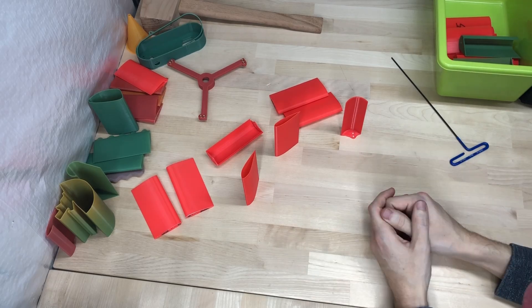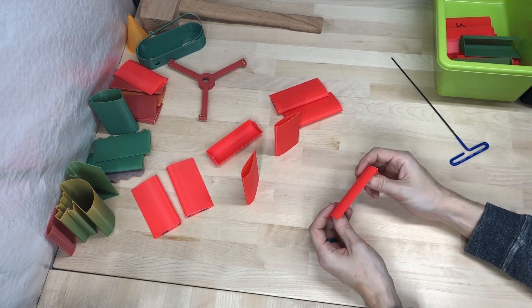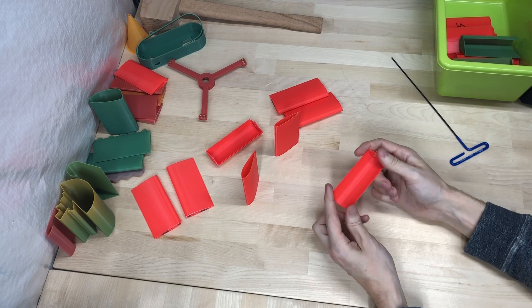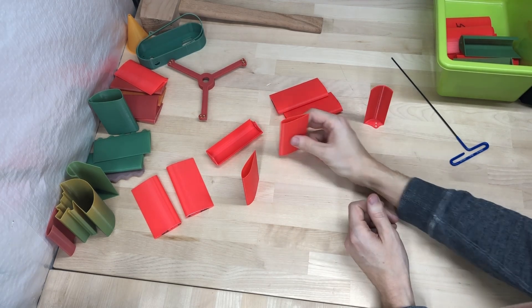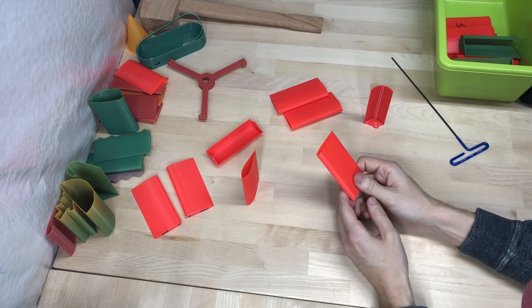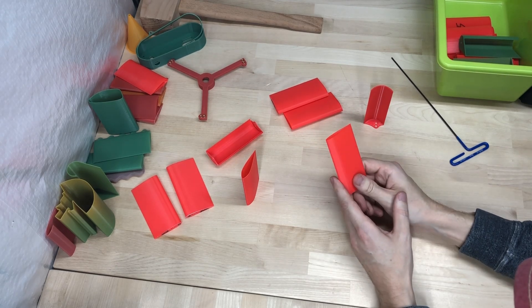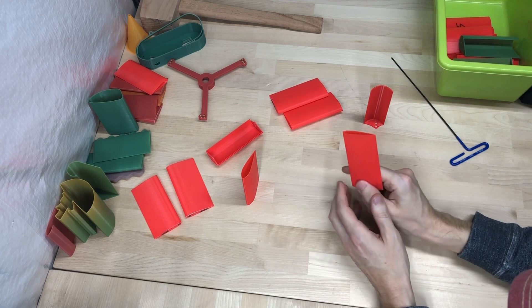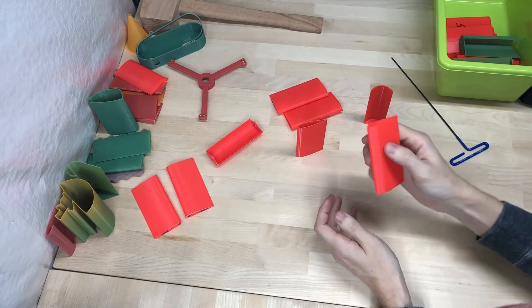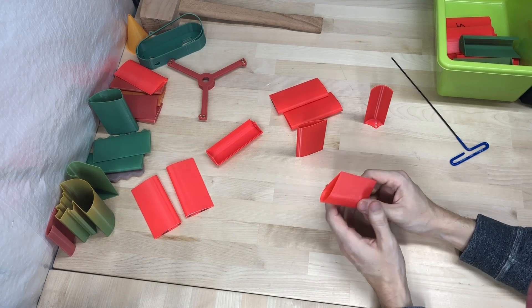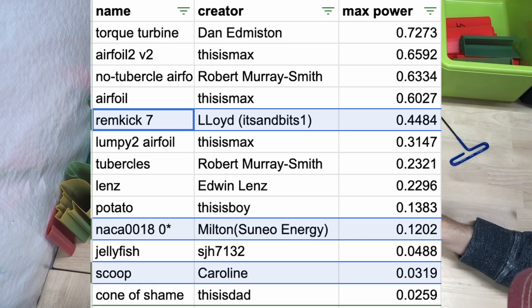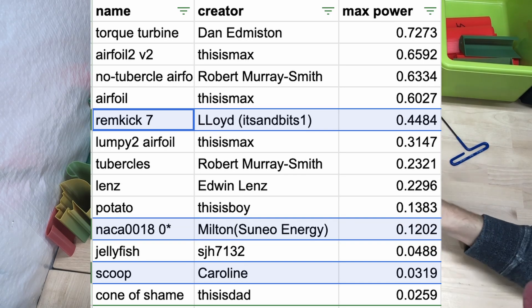Okay, let's see where these blades landed on the leaderboard. First up is Scoop. Scoop produced 0.0319 watts, landing between the cone of shame and the jellyfish turbine. Next up on the list is the NACA 0018, submitted by Milton. It made 0.120 watts, and falls just under the potato. And finally, the Rimkick 7. Producing the most out of the three, at 0.4484 watts, places it right between the lumpy airfoil and the not lumpy variant. Nice.